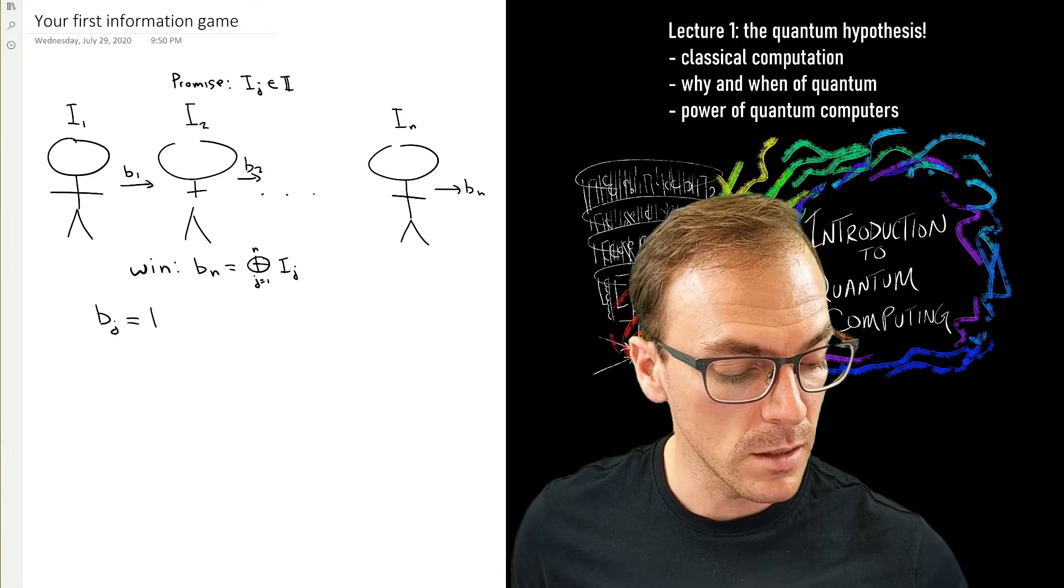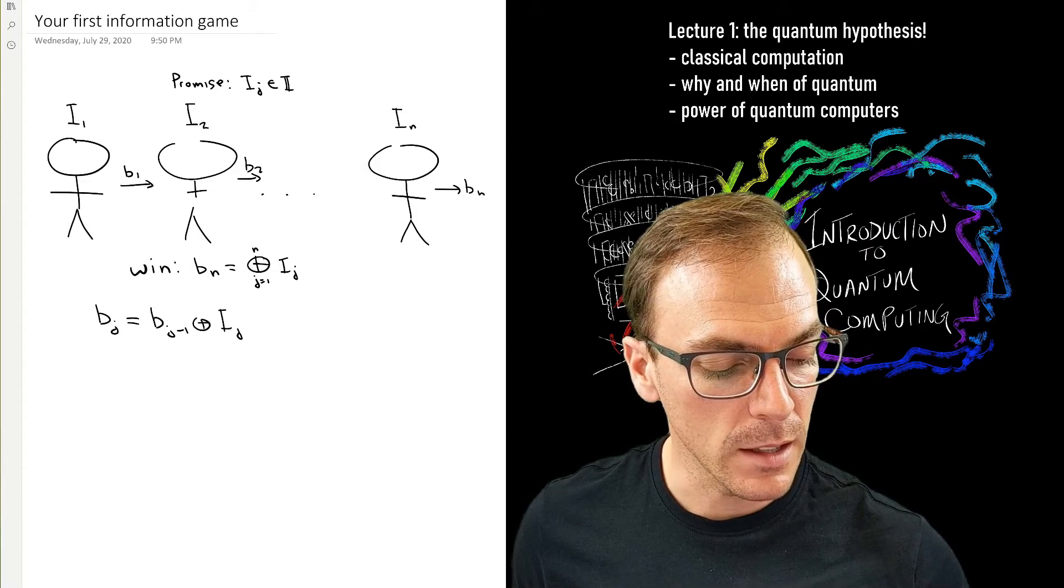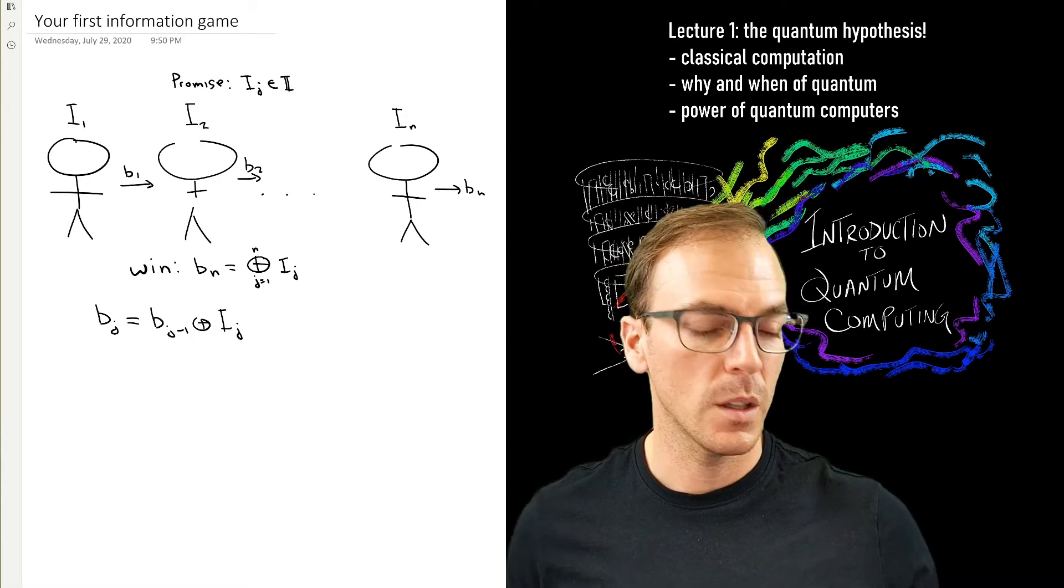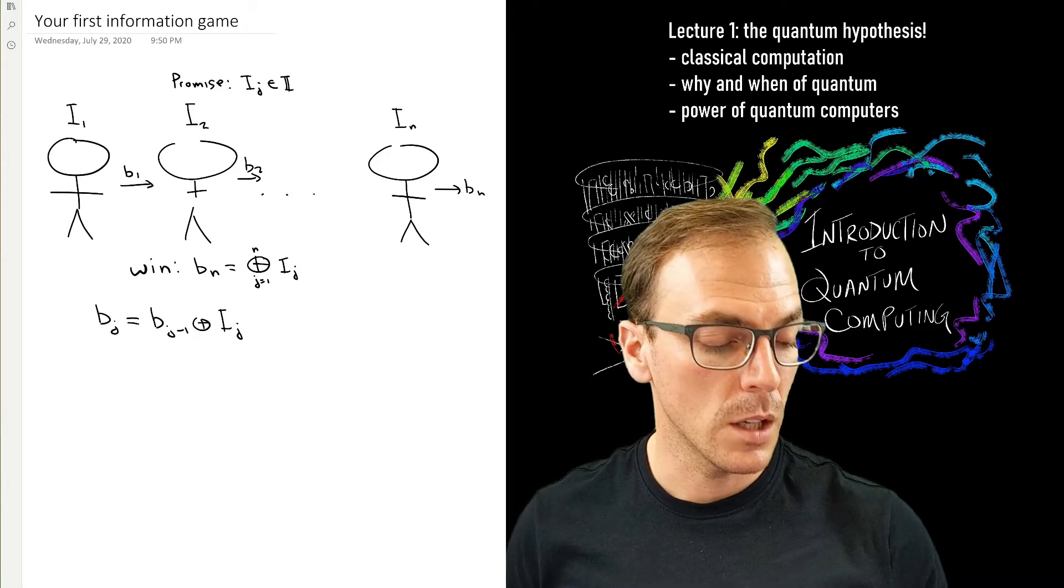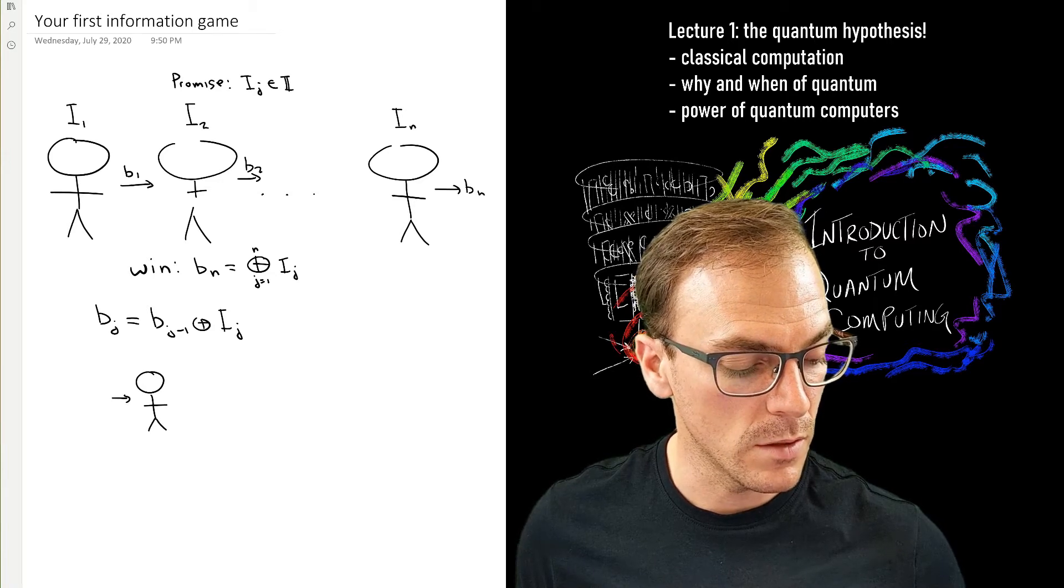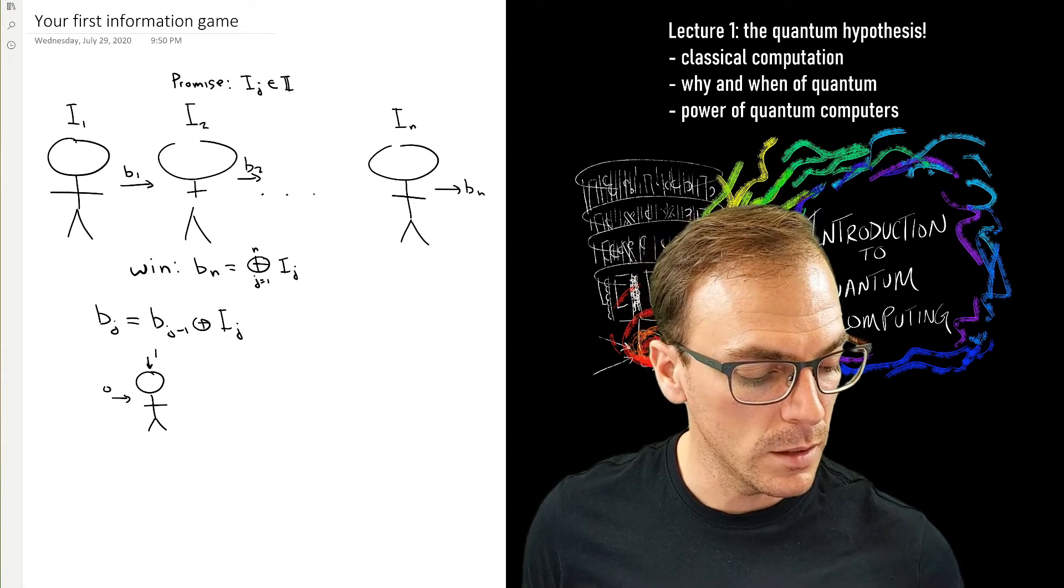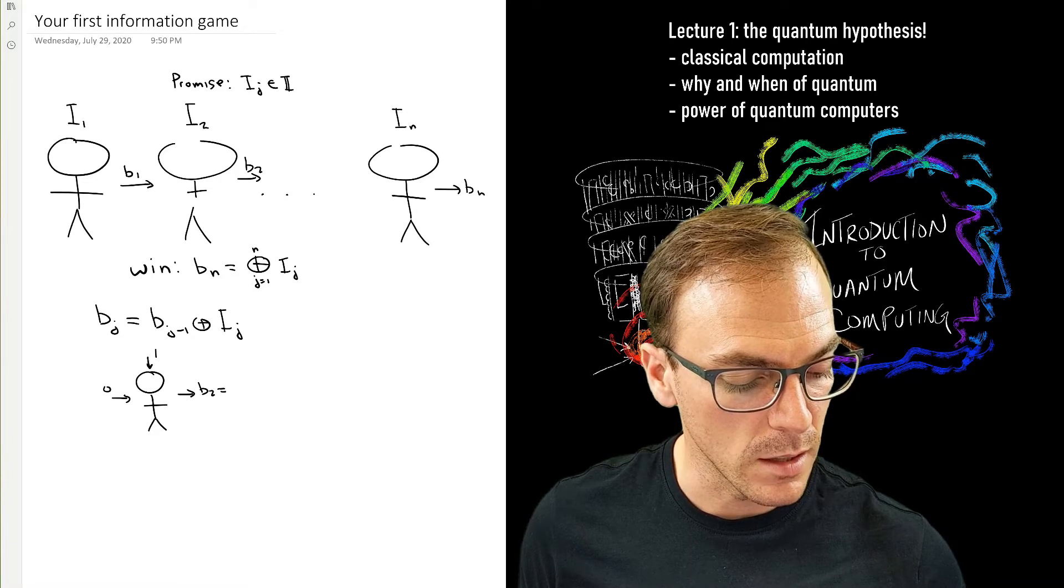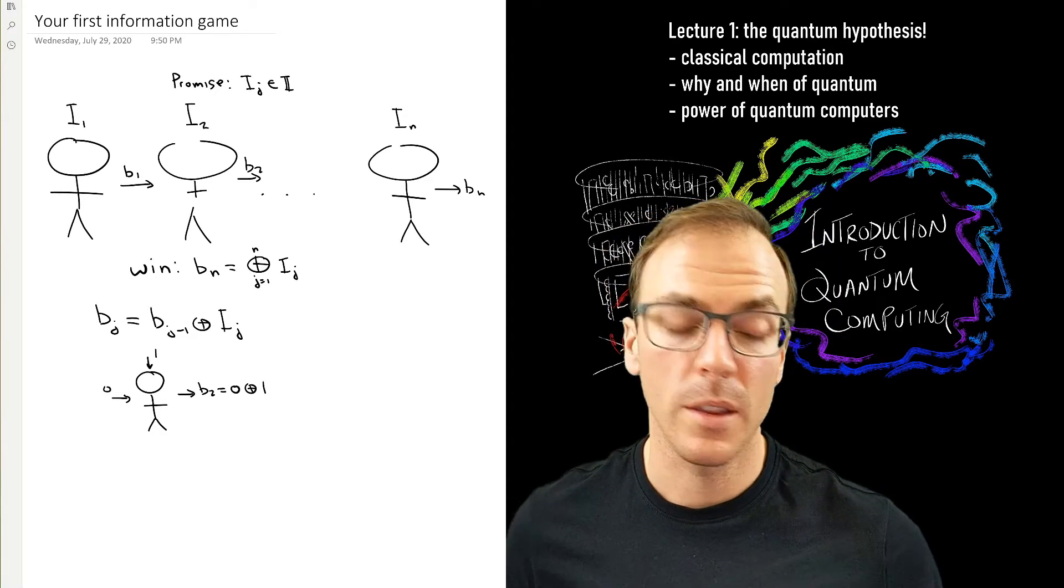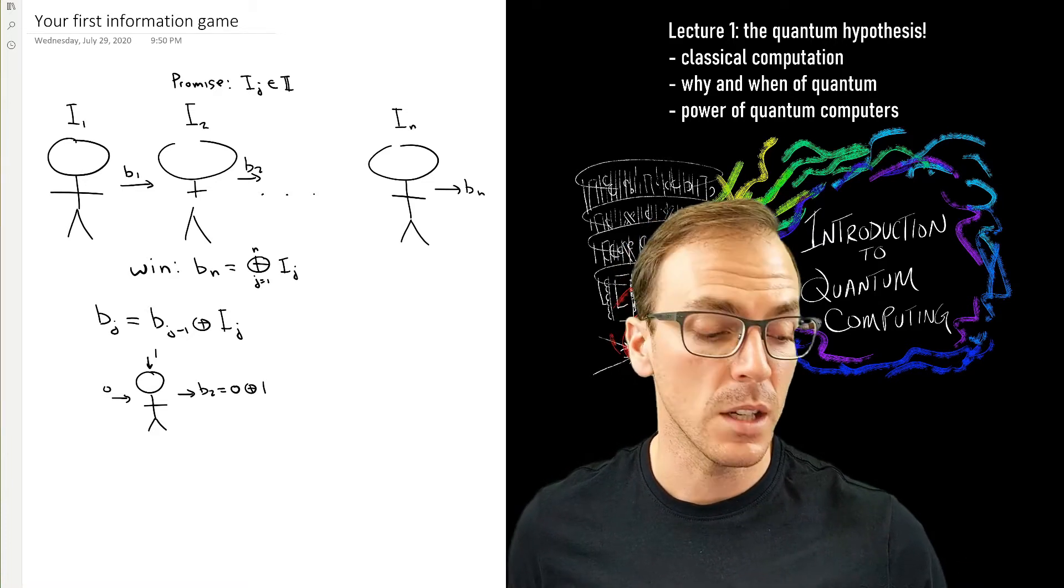Of course, when you think about it, it's not too difficult to come up with a strategy. A strategy is just something that specifies what an arbitrary player in the game would do. What that player should do is take the bit that they were given and add it to their piece of information that they were given from the referee in the game.